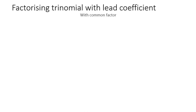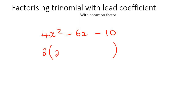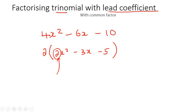In this lesson, we are going to be factorizing trinomials that look like this. So, is there a common factor? Yes, there is. So you would take out a common factor of 2, because the number 2 can fit into all of those, so you'd be left with 2x squared, take away 3x, take away 5. So even after we factorized, we still have a number left over in the front. That's what I mean when I say we're going to be factorizing trinomials that have a lead coefficient, even after we have done a common factor.